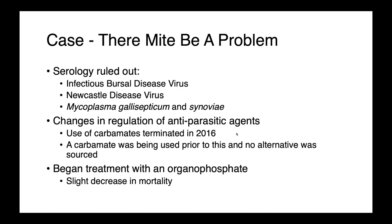The more Jenny and I talked, we came back to the parasites and tried to think about what could possibly lead to the increased mortality. Interestingly, there had recently been a change in the regulation of antiparasitic agents in Canada — the use of carbamates had been terminated in 2016, just one year prior. In this particular facility, a carbamate had been used previously, and once it was terminated, no alternative was sourced. The next step was treatment with an organophosphate, which resulted in a slight decrease in mortality.